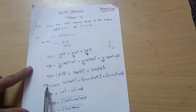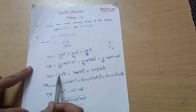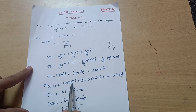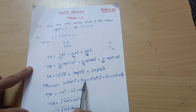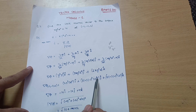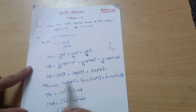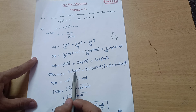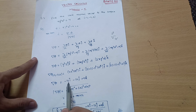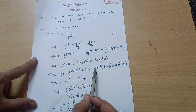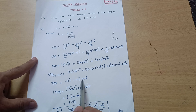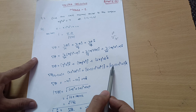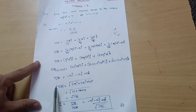Now we substitute the point x = -1, y = -1, z = 2. The î component: (-1)³(2²) = (-1)(4) = -4. The ĵ component: 3(-1)(-1)²(2²) = 3(-1)(1)(4) = -12. The k̂ component: 2(-1)(-1)³(2) = 2(-1)(-1)(2) = +4. So ∇φ = -4î − 12ĵ + 4k̂.